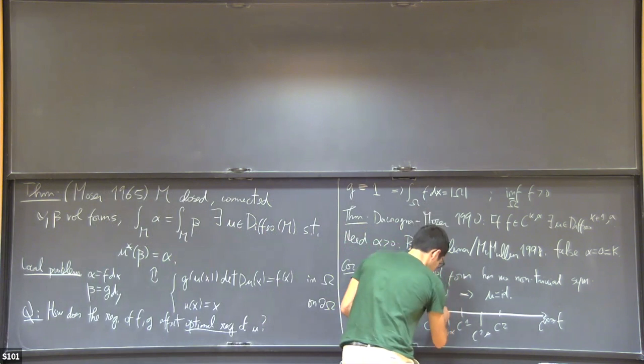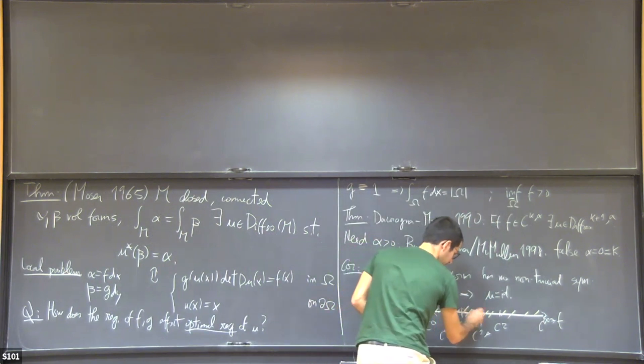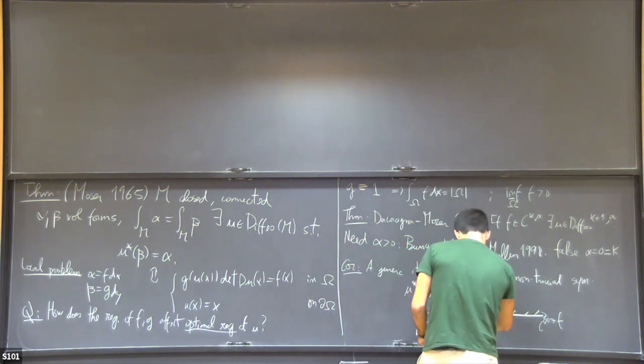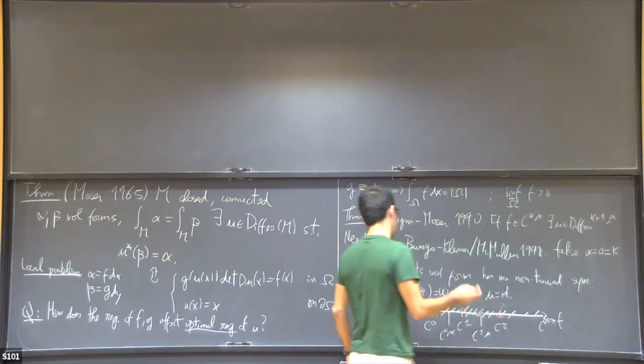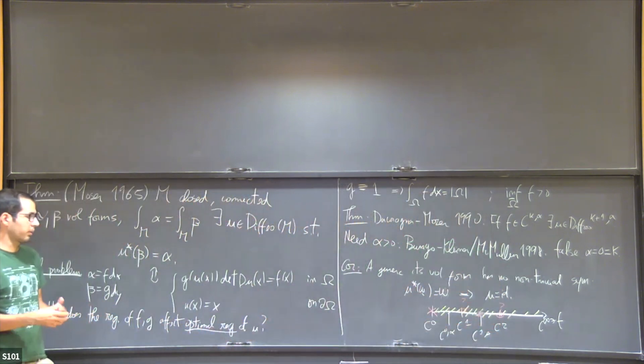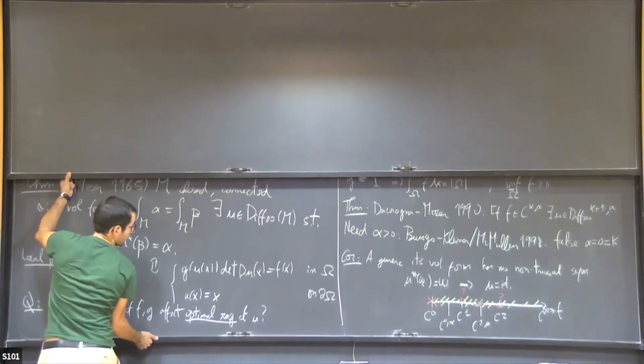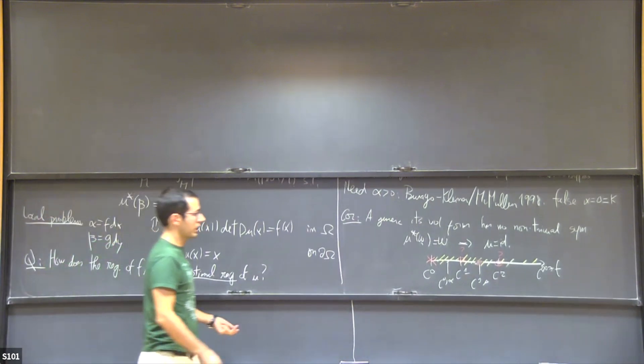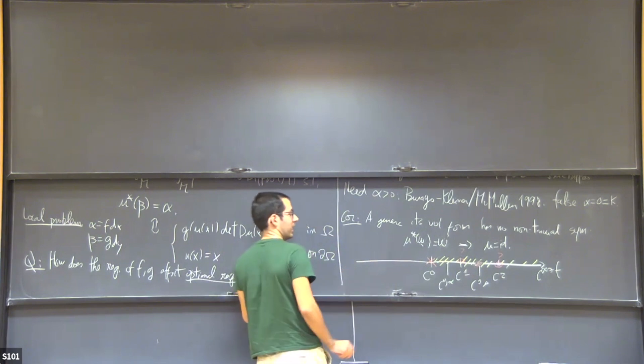It's actually not clear what happens at these integer spaces. Certainly the Moser method does not work. So one expects that they are probably false. In analysis, generally, these endpoint statements are not true. What I'm interested in now is what happens at this endpoint? One way of looking at this is by enlarging the scale.